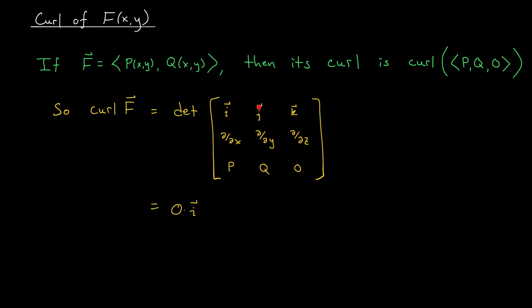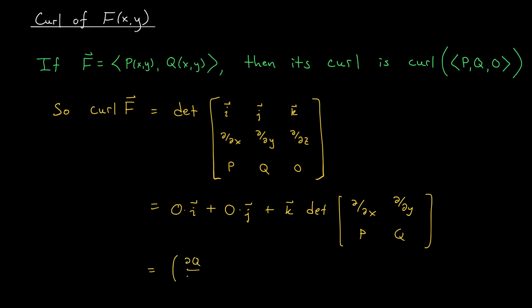Similarly, the j-hat term gives partial/∂x of 0 minus partial/∂z of p — also zero, since p doesn't depend on z. So both i-hat and j-hat disappear. This simply leaves us with k-hat times (∂q/∂x − ∂p/∂y). The curl of the R2 vector field is (∂q/∂x − ∂p/∂y) k-hat. Hopefully this looks familiar — these are exactly the derivatives that appeared in Green's theorem and our component test. So we've been working with the curl all along, we just didn't know it.